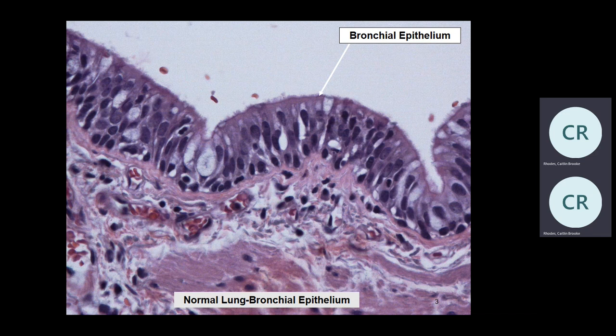What are these big things in the center? Goblet cells. When do you see a lot of goblet cells in the mucosa? COPD, bronchitis — asthma can produce a lot of mucin. It's reactive.